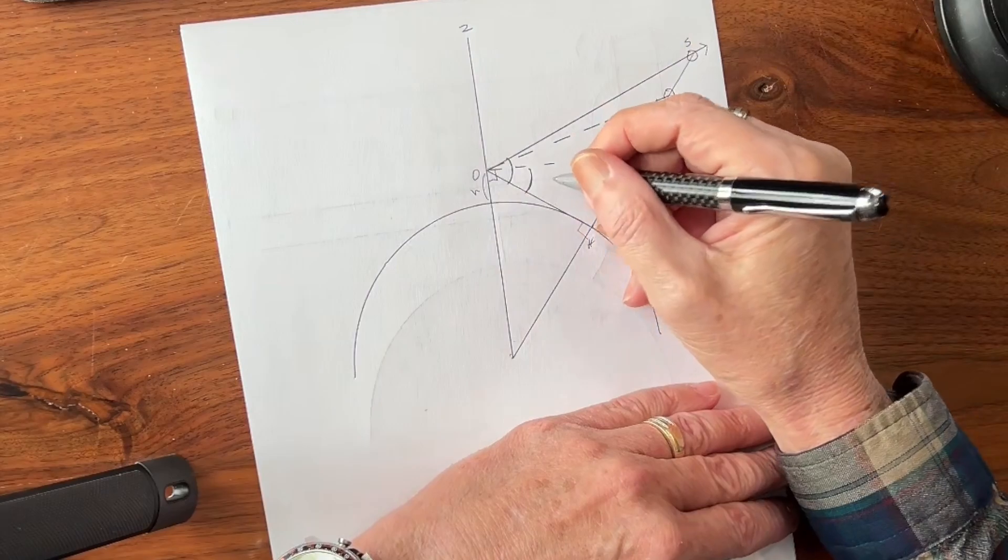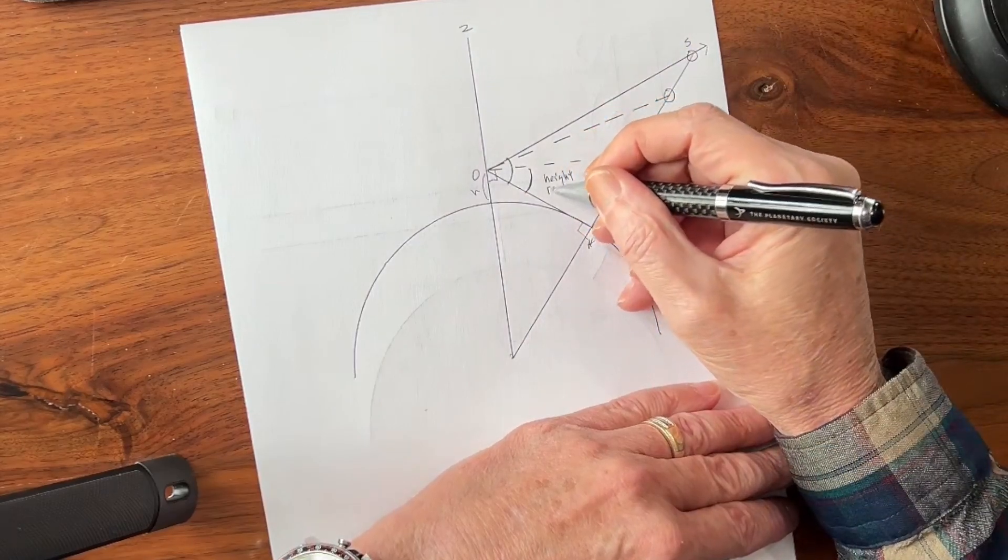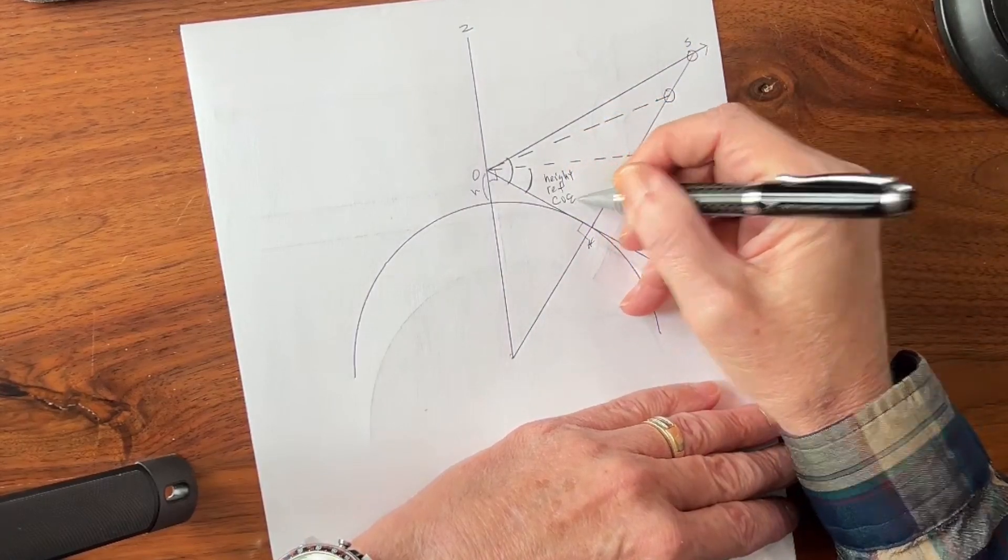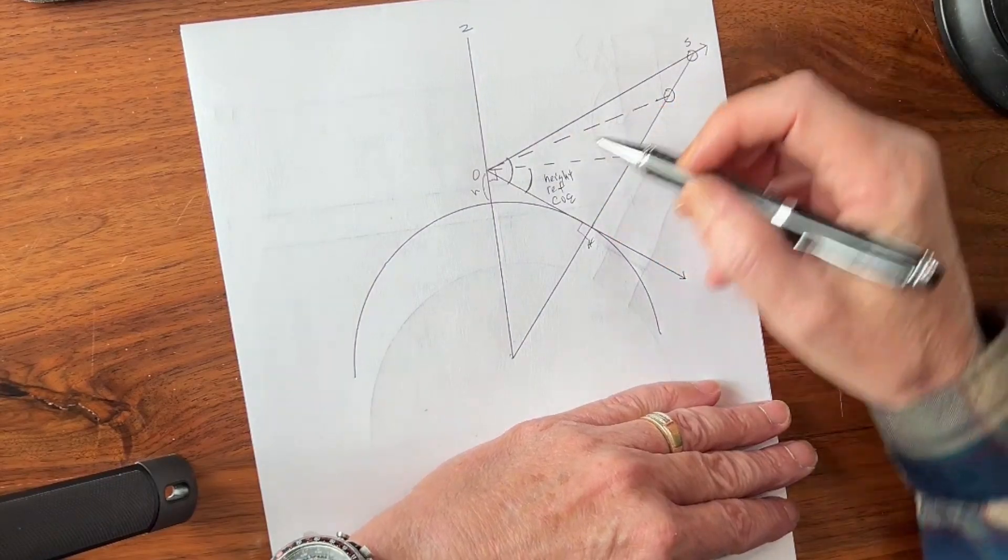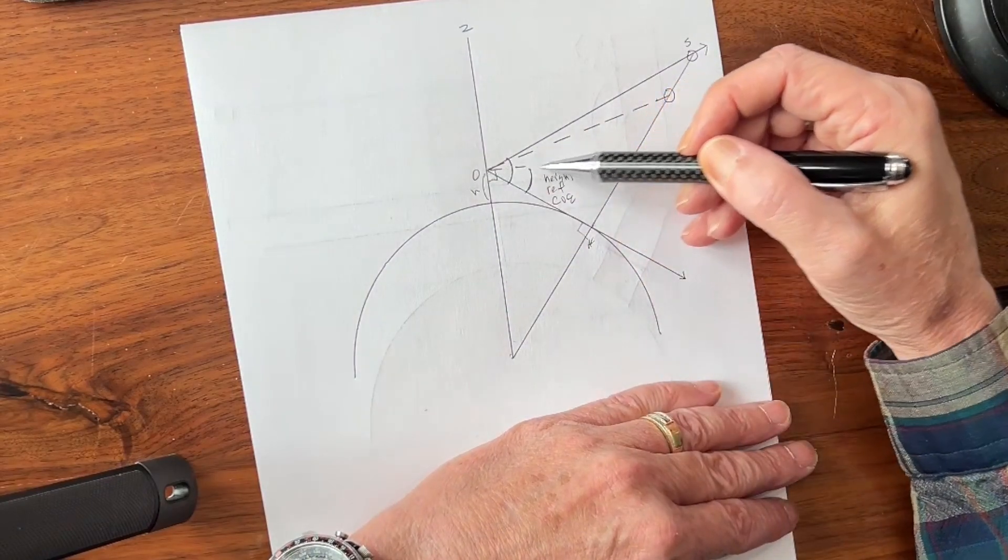The dip angle includes height, refraction, and the curve of Earth. So by removing the dip angle from our total reading, what we do is we actually get this horizontal.